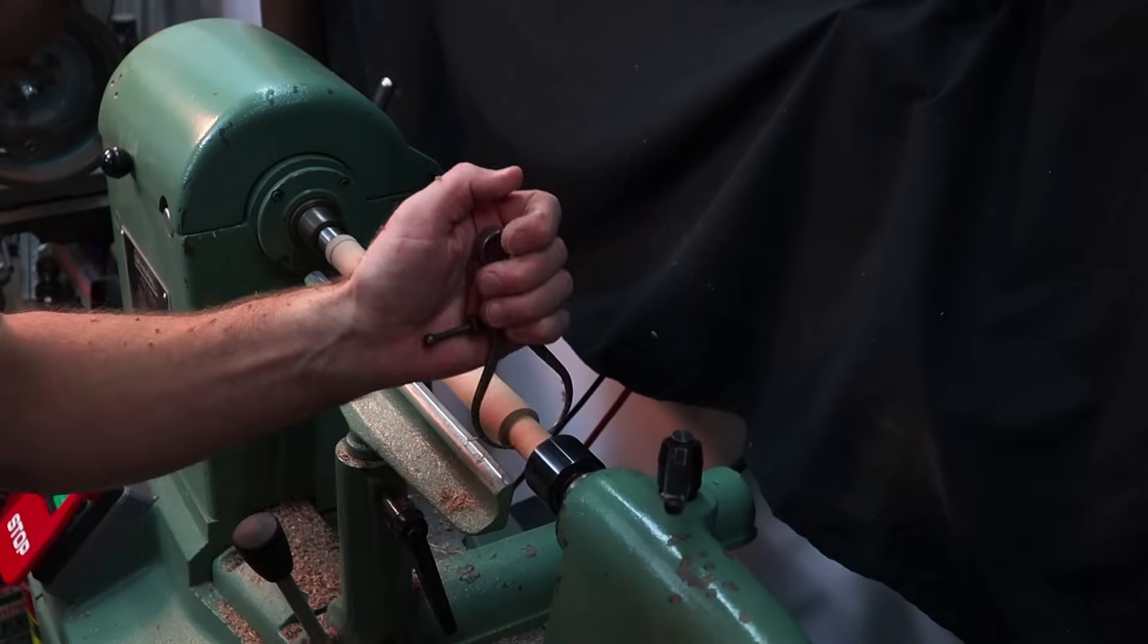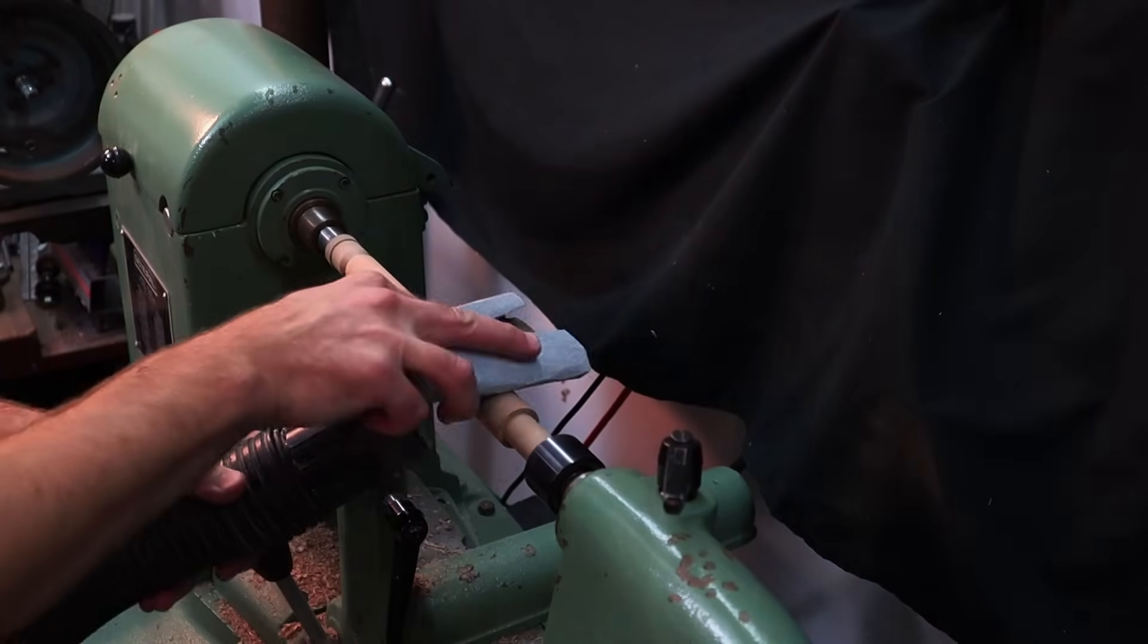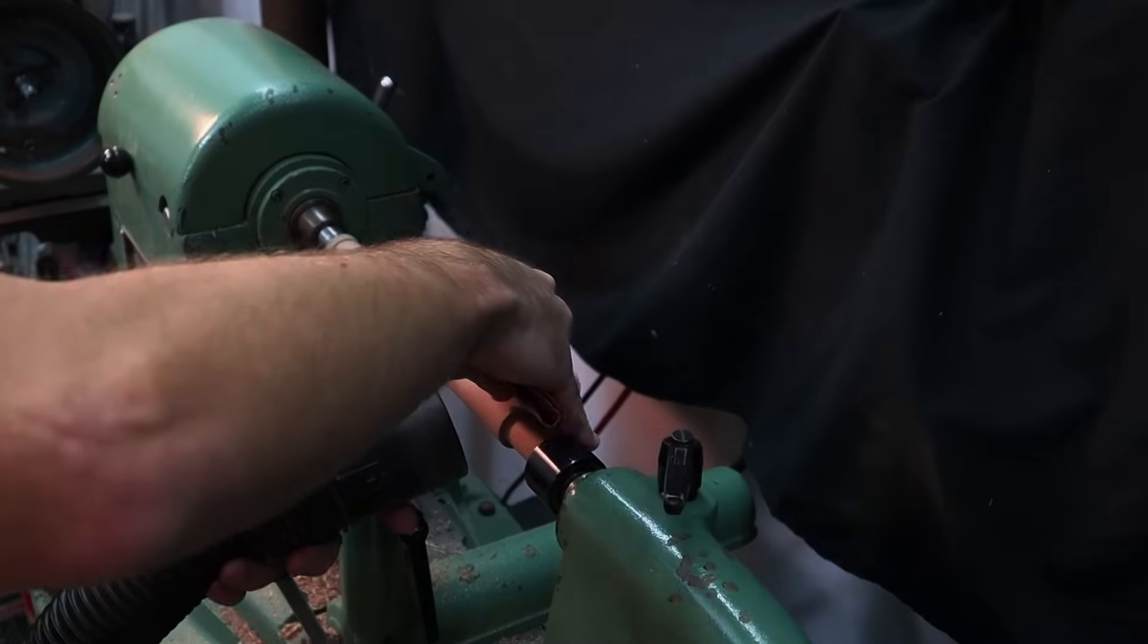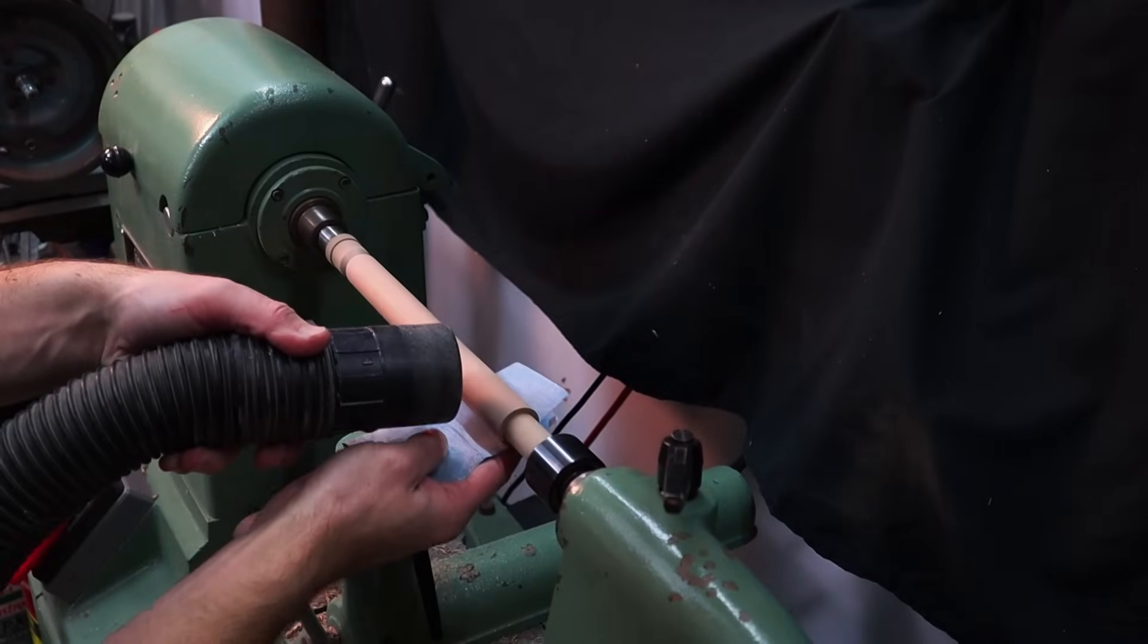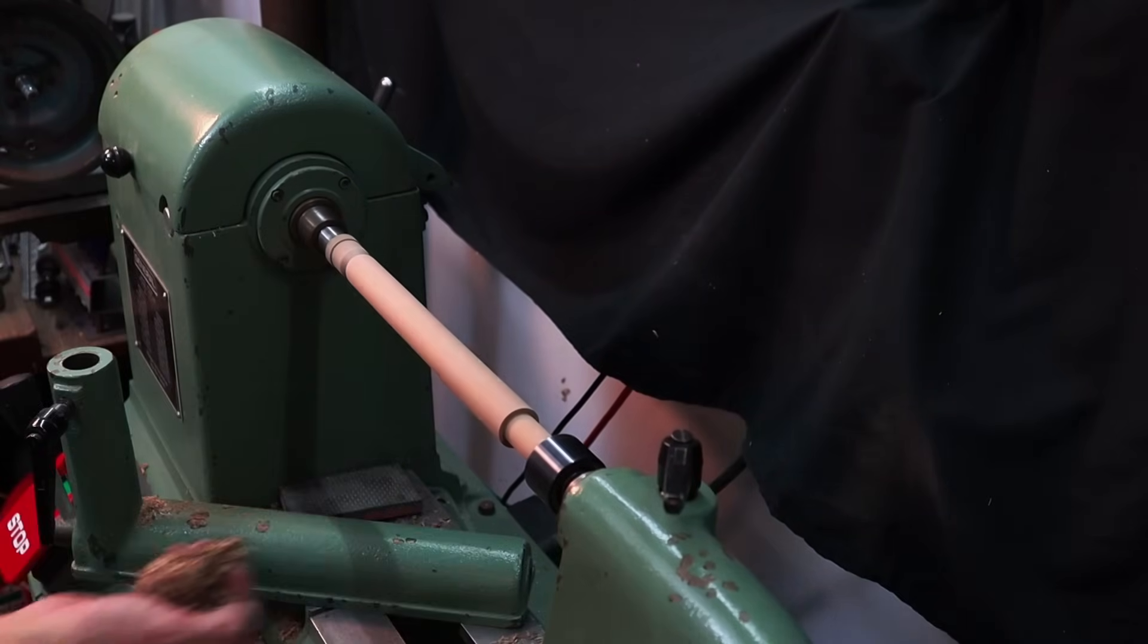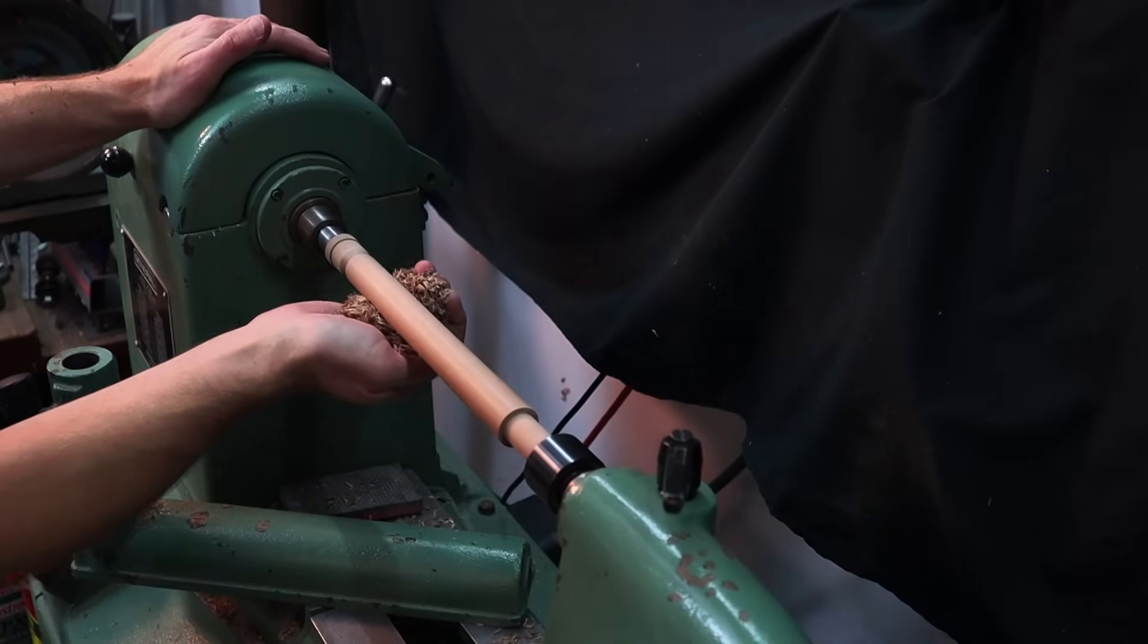This is looking good and it's time to go through the grits now and get this to a point where we can put the finish on. I'm starting at 100 grit and normally I would not recommend using a vacuum like this but the fine dust is just terrible for my equipment so I'm just trying to be careful doing this. I've sanded it all the way up to 320 grit and then I'll take some of the wood chips and burnish the surface of the wood to smooth it even more.